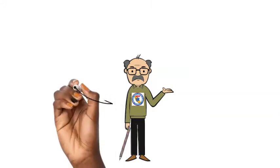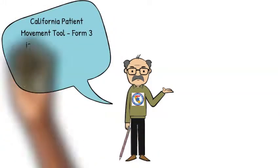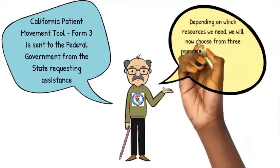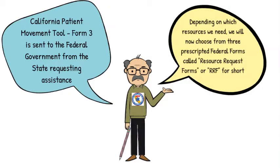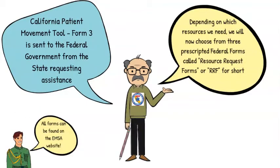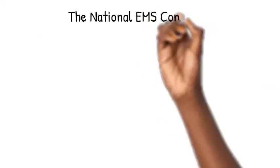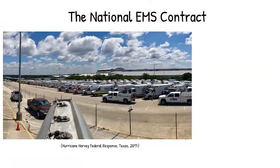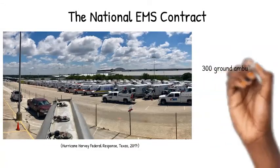When California needs resources, we put together the California Movement Tool Form 3, which goes from the state OES to the federal government essentially saying we need help. We then use specific forms called RRFs — Resource Request Forms — to dictate exactly what we want.